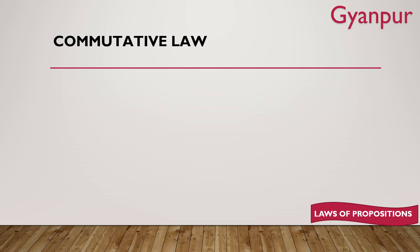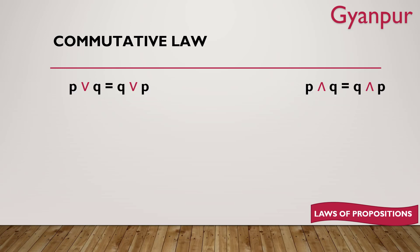Now talking about commutative law. You may have seen this in mathematics — for example, 3 plus 2 is the same as 2 plus 3. Similarly, p AND q is the same as q AND p, and p OR q is the same as q OR p. So whenever you are simplifying questions, you can change the positions of variables while keeping the connective the same — it will not affect the result. Commutative law is applicable for OR and AND only.